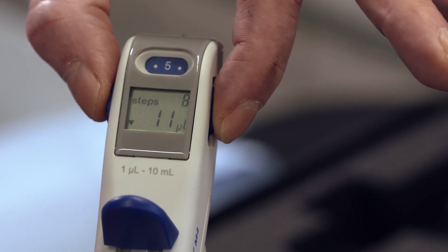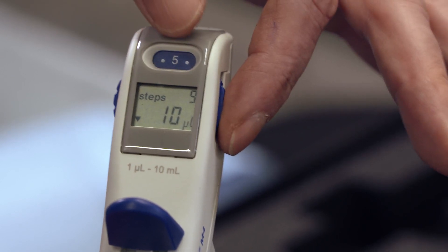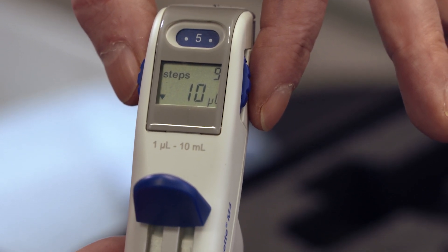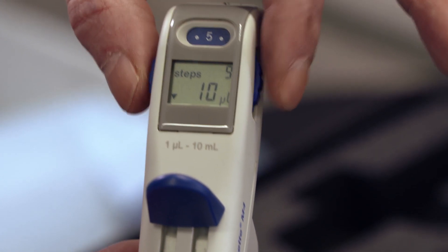With this dial you can adjust the amount of ink you apply. When you set it to 5, the display will tell you you can apply 10 µL. Even when your battery is dead you can still adjust the amount of ink with this dial.